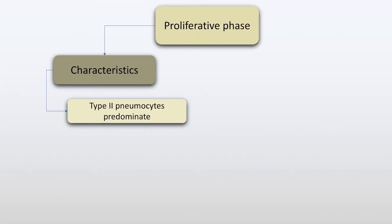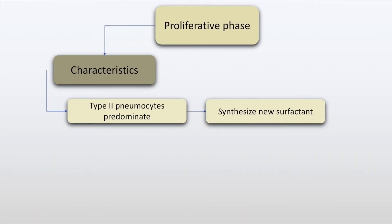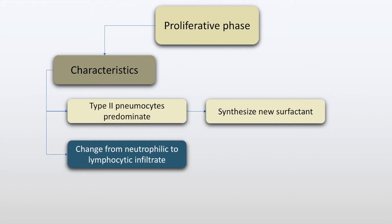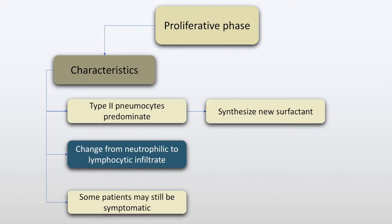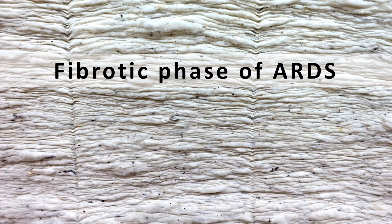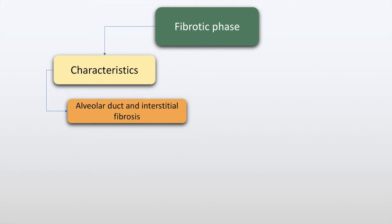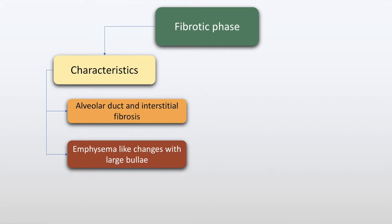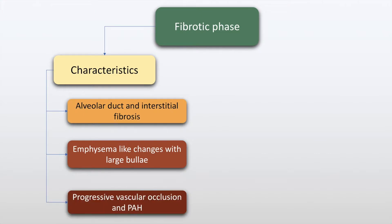The proliferative phase of ARDS is characterized by type 2 pneumocytes which predominate and synthesize new surfactant. The infiltrate changes from neutrophilic to lymphocytic predominant and some patients may still be symptomatic in this phase. Finally, the fibrotic phase is characterized by alveolar duct and interstitial fibrosis with emphysema-like changes and formation of large bullae.